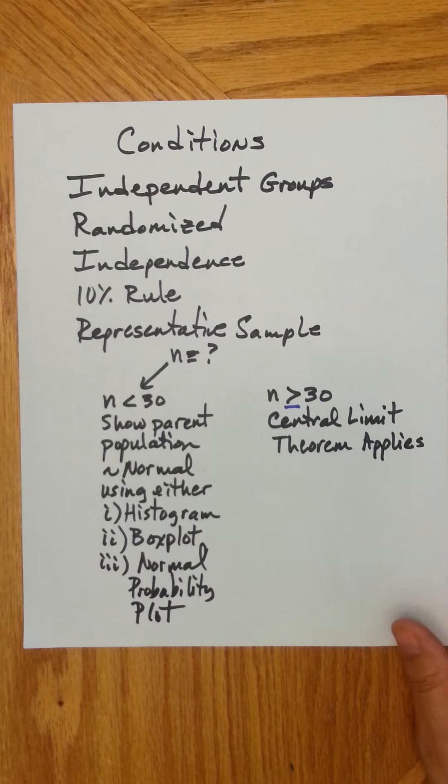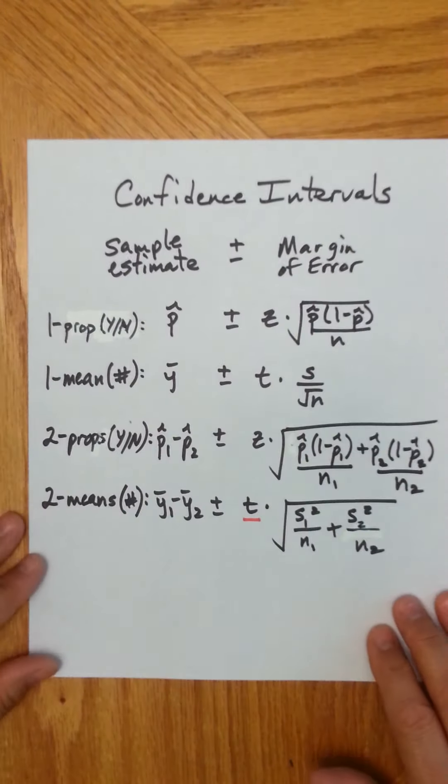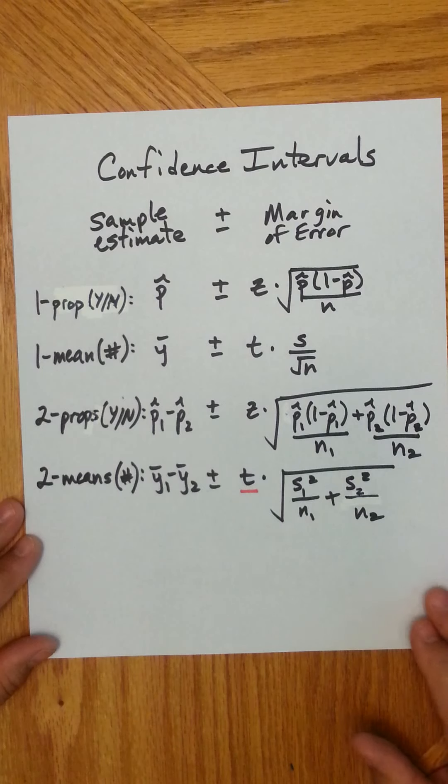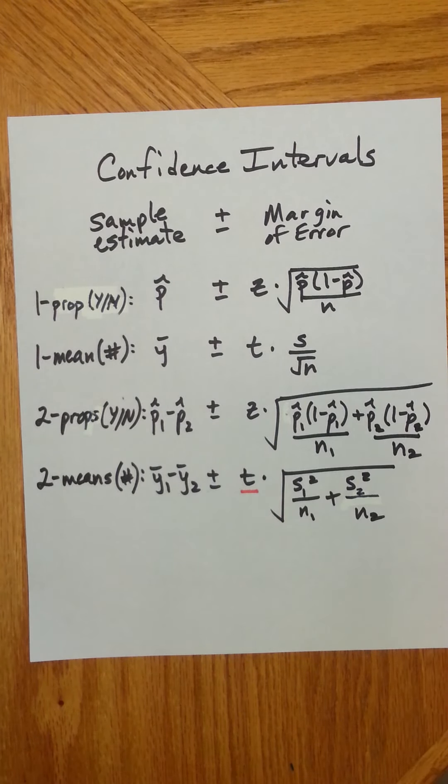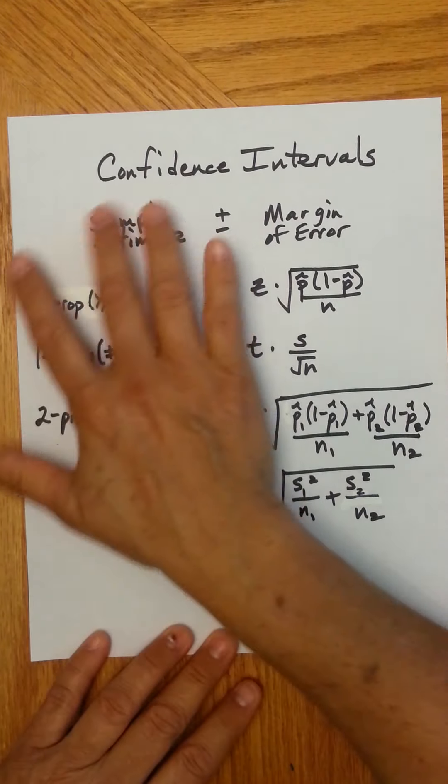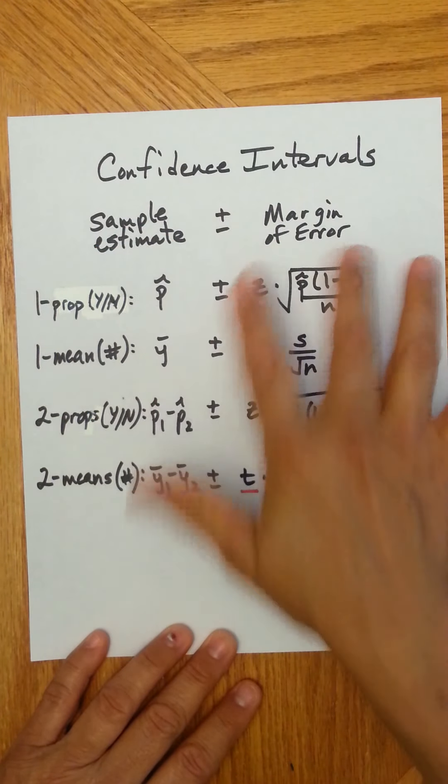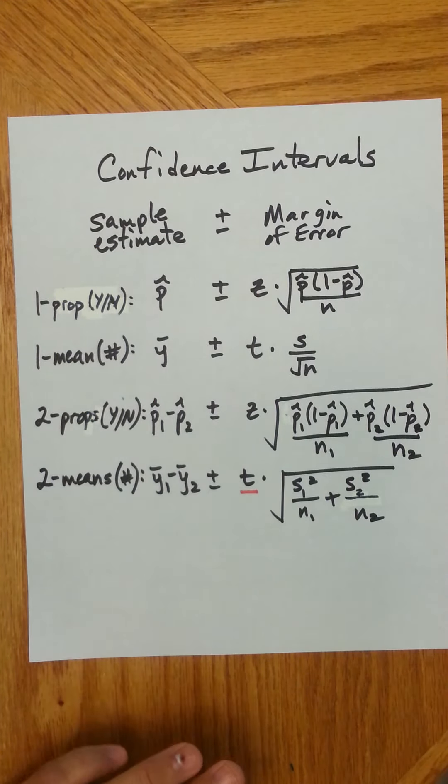So, as long as conditions are met, for confidence intervals, what we can see is that the structure, the basic thought process is the same. Regardless of whether I'm working with one proportion, a yes-no trait, one mean, a numerical trait, two proportions, the difference in two yes-no traits, or two means, the difference in two numerical traits, the thought process is the same. You take a sample estimate, and then you add or subtract a margin of error.